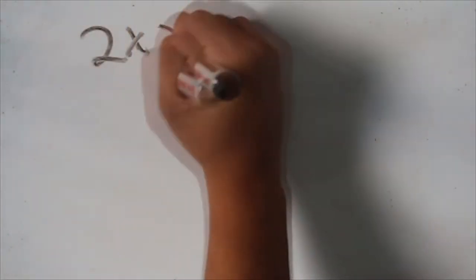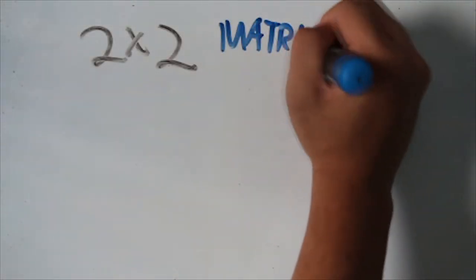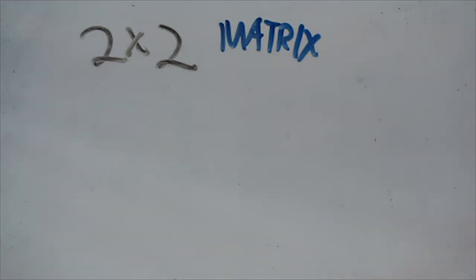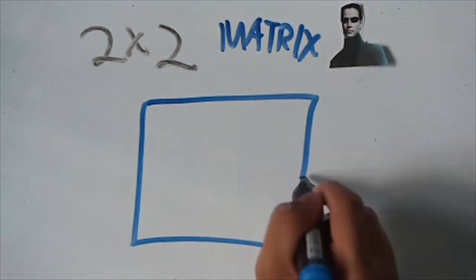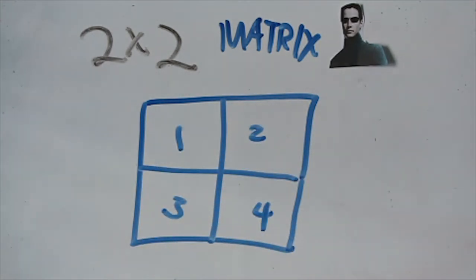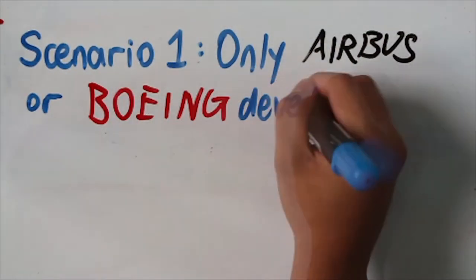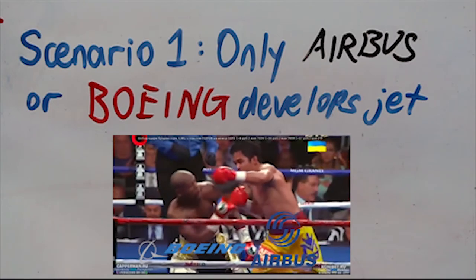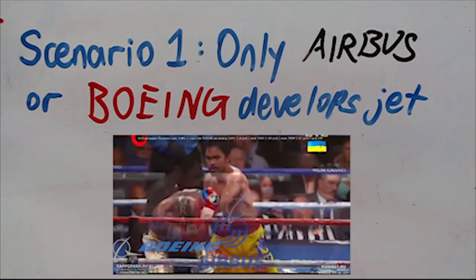This scenario can be illustrated using a 2x2 payoff matrix, which shows the respective outcome for each combination of choices. Each player — Boeing and Airbus — must decide between two options: either to invest or not to invest in the Super Jumbo Jet. Should only Airbus develop the jet, Boeing risks losing its long-held monopoly in the 400-seater large aircraft market, while the payoff for Airbus is immense.